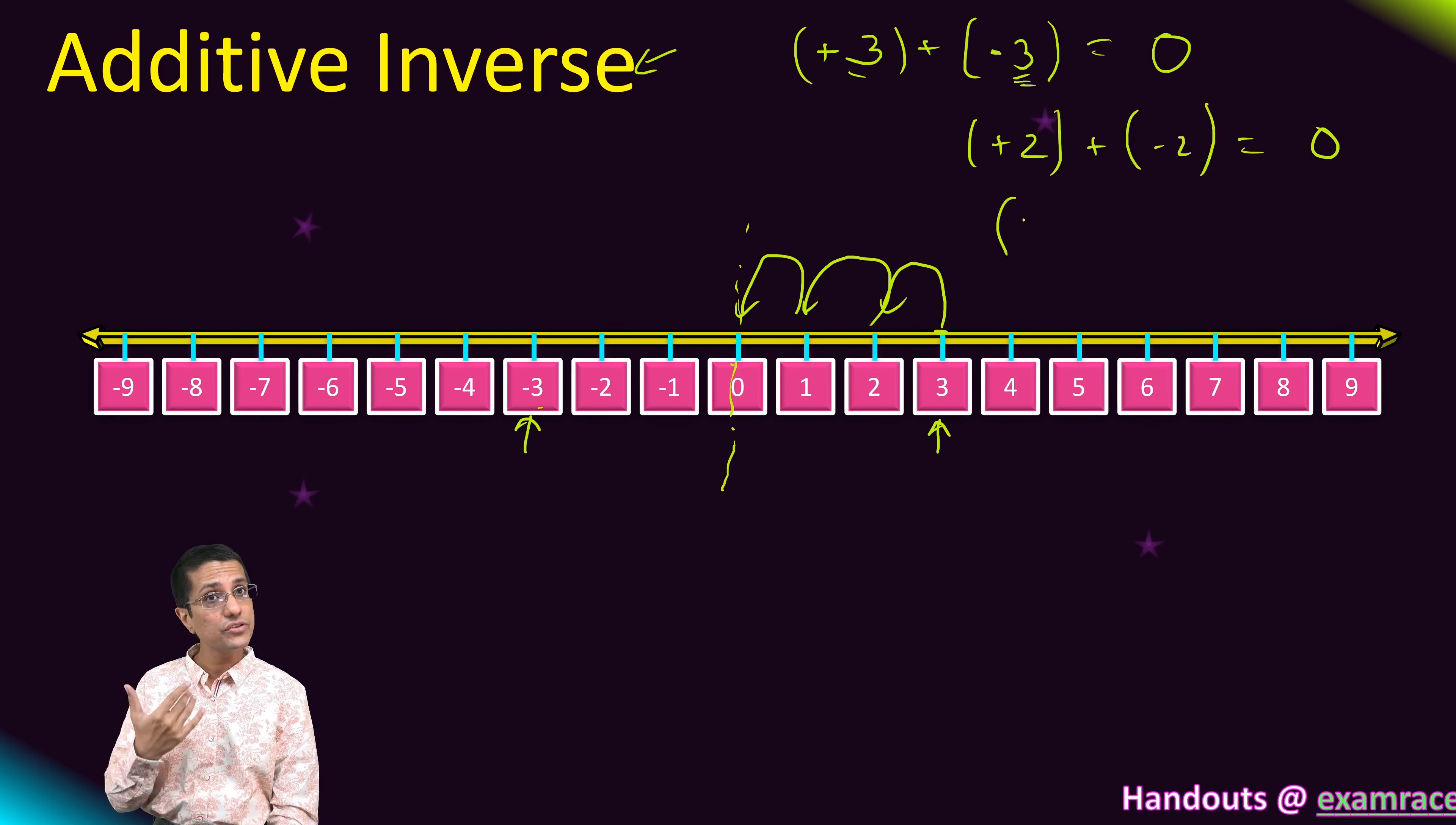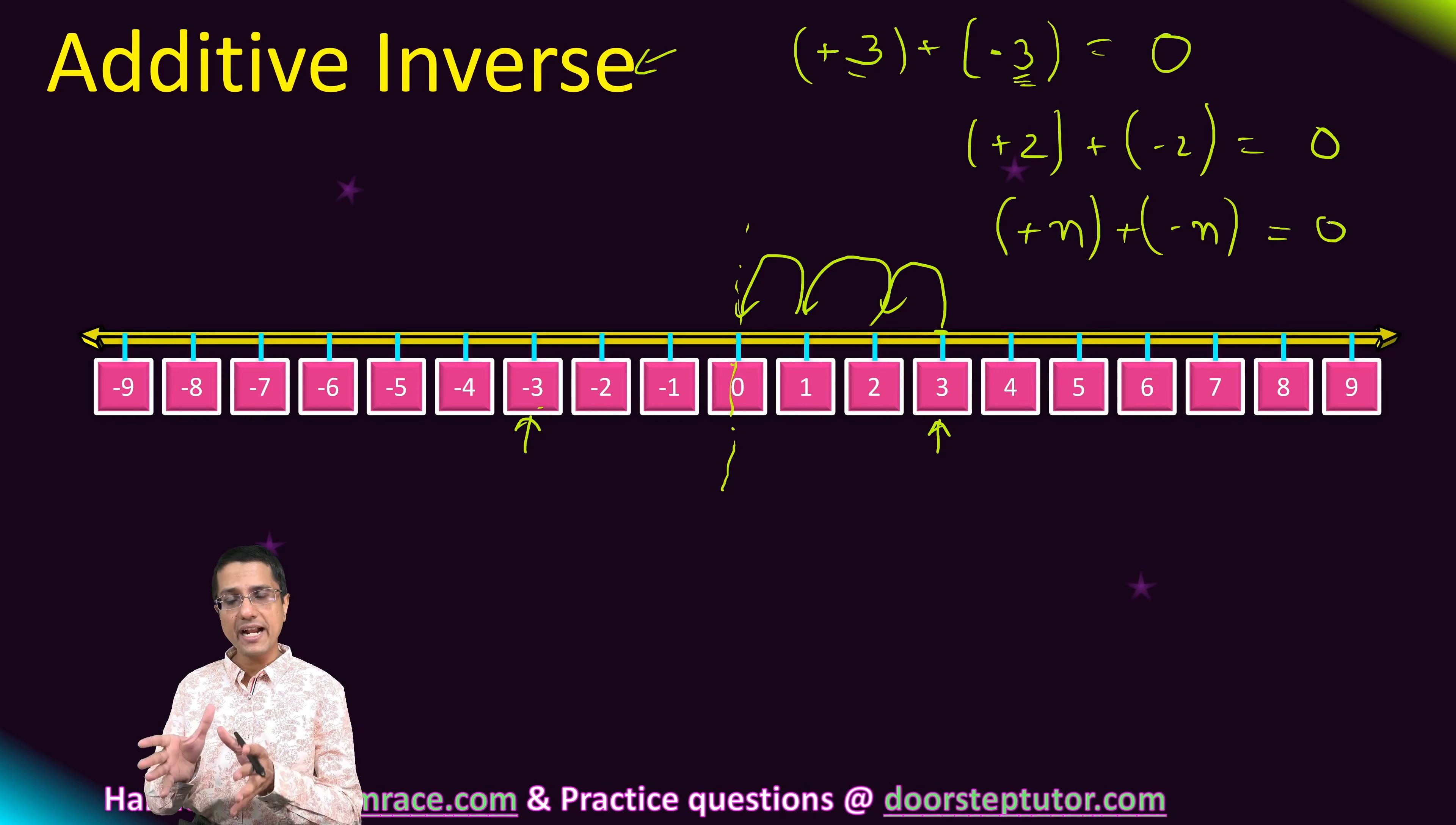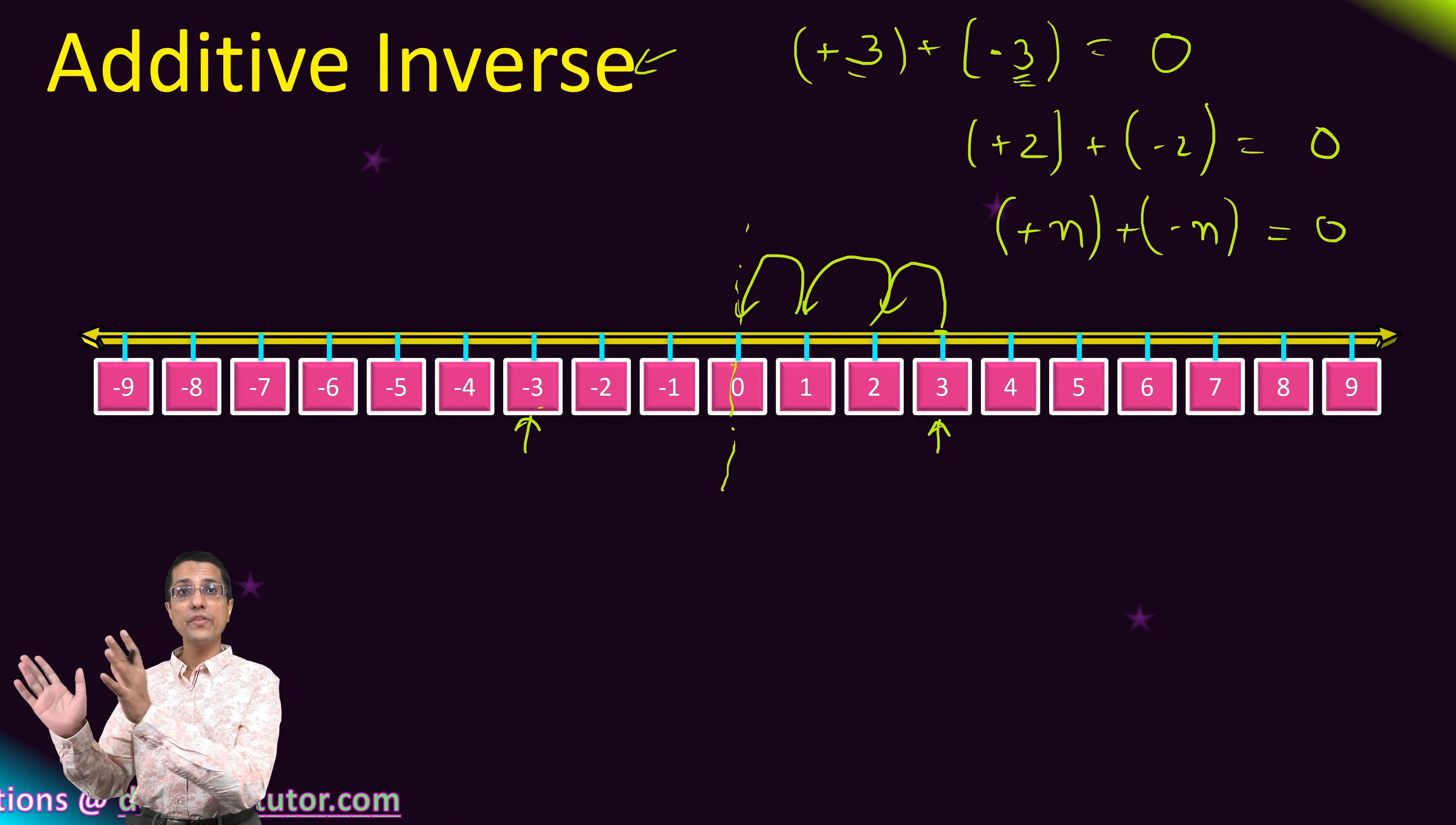So 0 does not have an additive inverse, or 0 is the additive inverse of itself. If you want to think about it that way, n plus minus n equals 0. So this additive inverse property is there for all the integers. They have a distinct additive inverse on the negative side.